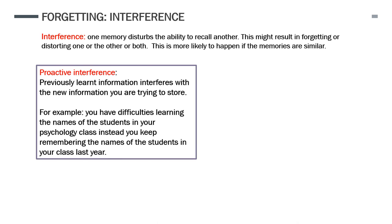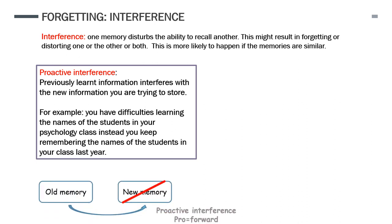There are two different types. The first is called proactive interference: previously learned information interferes with new information you are trying to store. For example, if you have difficulty remembering the names of students in your psychology class and instead remember the names of students from the year before — that is an old memory interfering with a new memory.